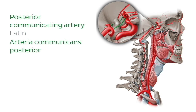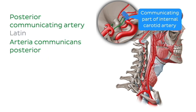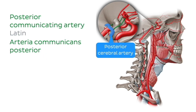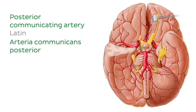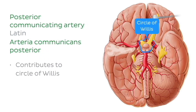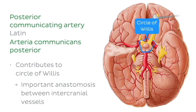The posterior communicating artery originates from the communicating segment of the internal carotid artery. It extends posteriorly and joins with the posterior cerebral artery. As we can see highlighted in this inferior view of the brain, this artery contributes to the formation of the circle of Willis, which is an important anastomosis between the intracranial vessels. Keep an eye out through the tutorial as we discover more components of the circle of Willis.